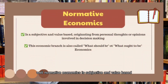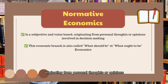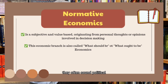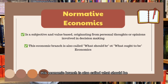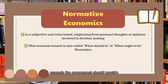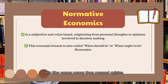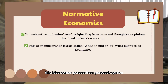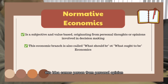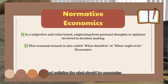Normative economics, on the other hand, is subjective and value-based, originating from personal thoughts or opinions involved in decision making. It often sounds political. This branch is also called 'what should be' or 'what ought to be' economics. For example: the government should provide basic health care to all citizens — this idea comes from personal opinion and reflects the 'what should be' concept.